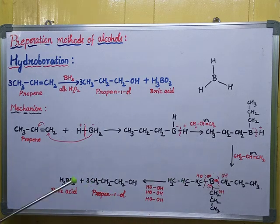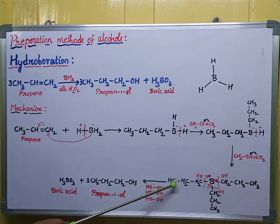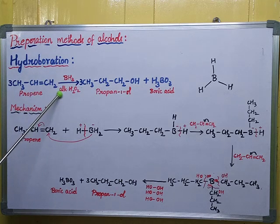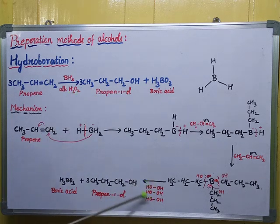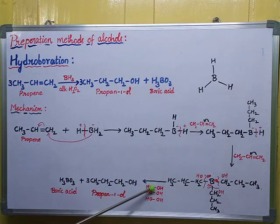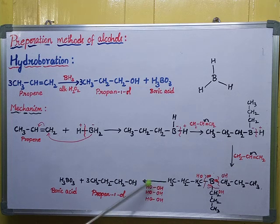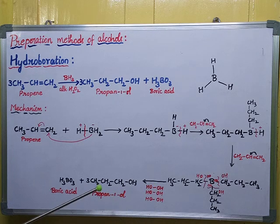This boron surrounded by three alkyl groups is unstable because it cannot carry all the groups around itself, so it readily tries to break. Now we add hydrogen peroxide dissolved in base — alkaline indicates base. I'm taking three molecules of hydrogen peroxide because we have three propene molecules. Each hydrogen peroxide has two OH groups, written as O-H and O-H.